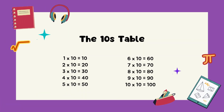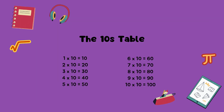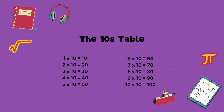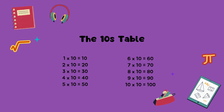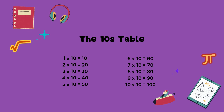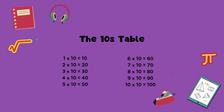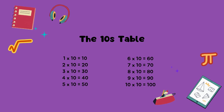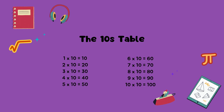The tens table. 1 times 10 equals 10. 2 times 10 equals 20. 3 times 10 equals 30. 4 times 10 equals 40. 5 times 10 equals 50.